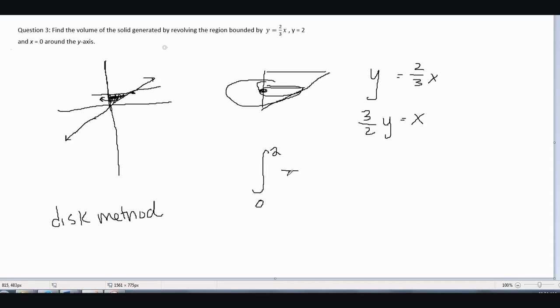The formula for the disk method is πr². So we have π times our radius (3/2)y squared, dy.